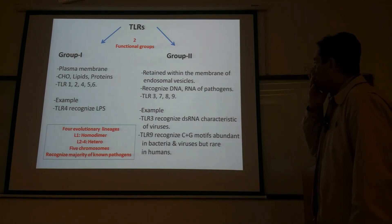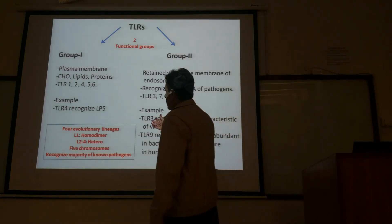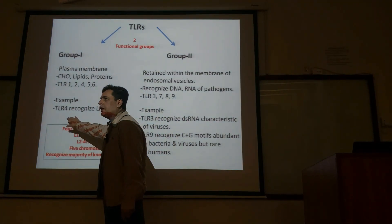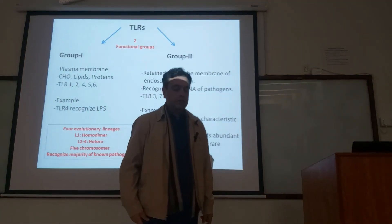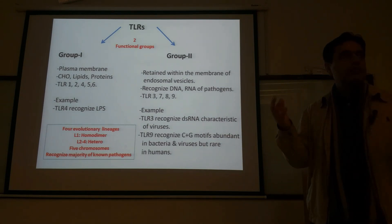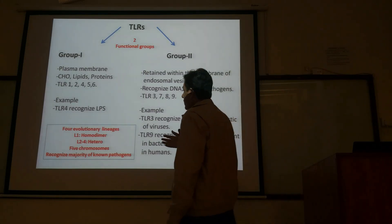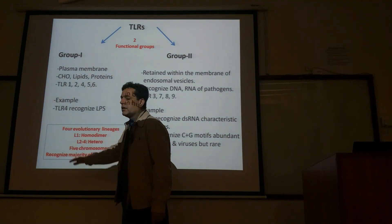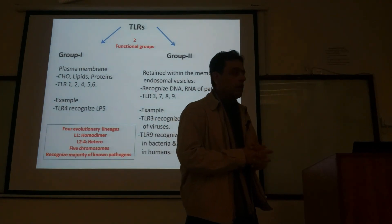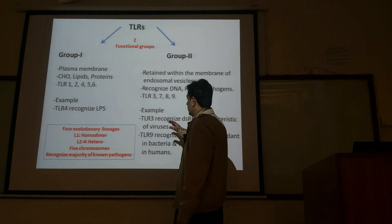Taking an example from group one receptors: TLR4, the toll-like receptor 4, recognizes lipopolysaccharide (LPS), which is part of the cell wall of gram-negative bacteria. These signaling receptors initiate the process of inflammation, which we have discussed in detail before.